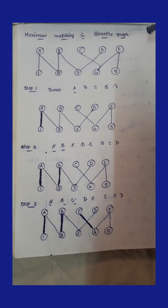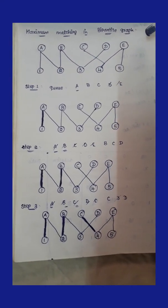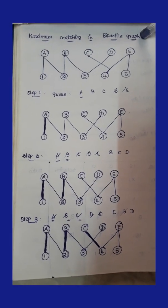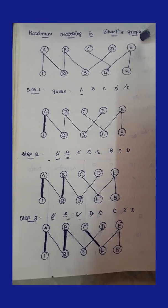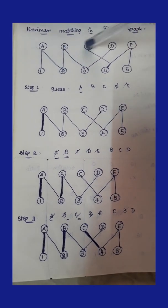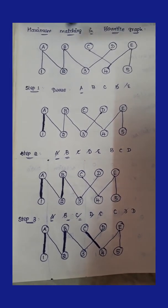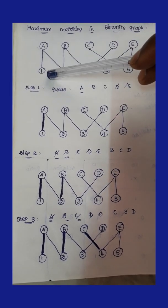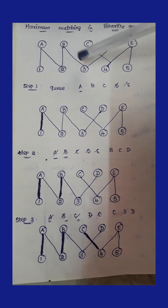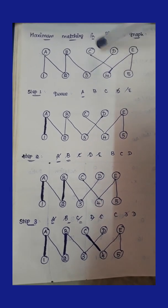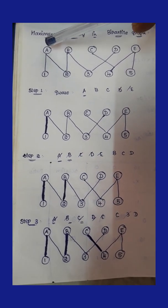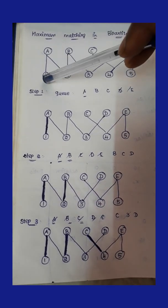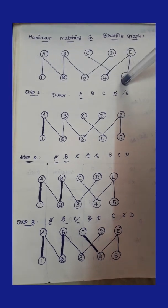The next topic in the design and analysis of algorithms is maximum matching in a bipartite graph in Unit 4. The question will give you vertices labeled with alphabets or numbers. We need to find the perfect pair among the vertices. We can either store the vertices in a queue using alphabets or using a numbering format.